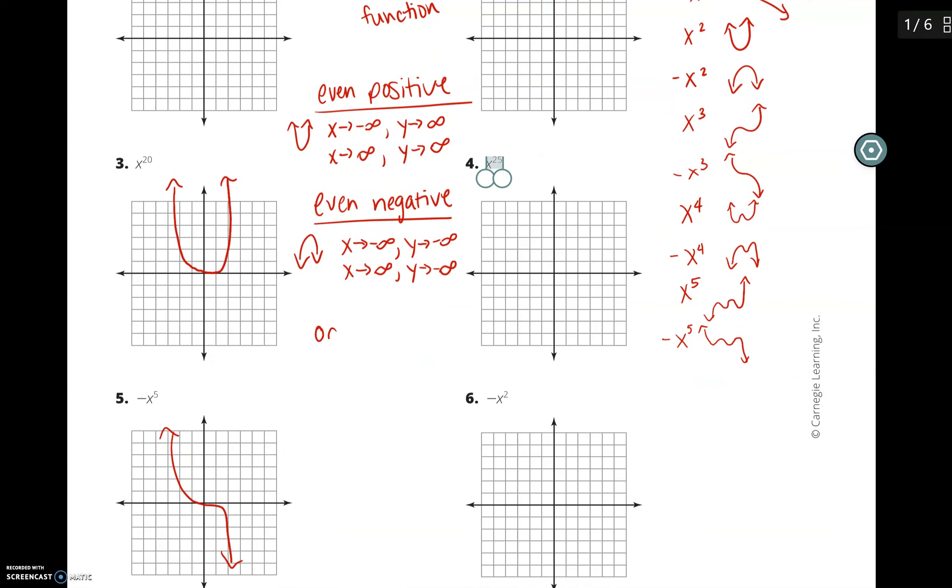If it is odd and positive, as x gets smaller, y also gets smaller because we're going down on the left side. As x gets bigger, y will also get bigger because we're going up on the right side. So our x values are getting bigger, our y values are getting bigger.